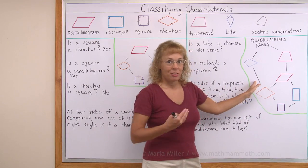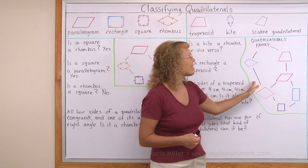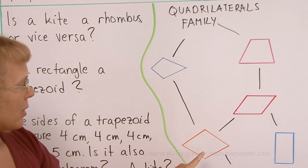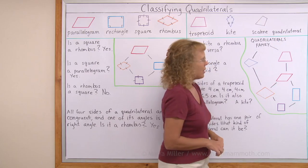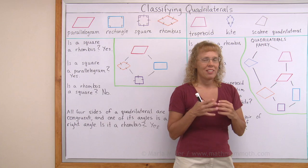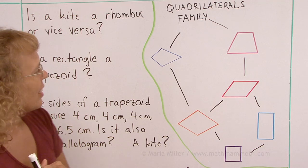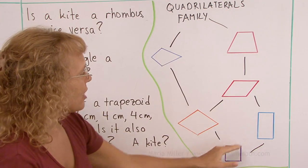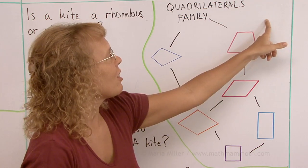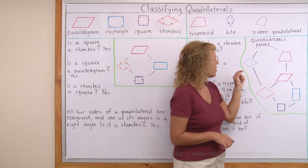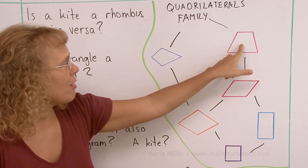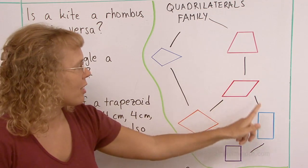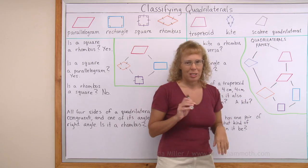I have now expanded the tree diagram of quadrilaterals. We have a kite, a trapezoid, then parallelogram, rhombus, rectangle, and square. You might wonder where is the scalene quadrilateral — the one that doesn't have any congruent sides. It would go off on its own; none of these here would be scalene quadrilaterals. And once again, everybody downstream from trapezoid is in the trapezoid family, like children and grandchildren. We can use this diagram to answer questions.